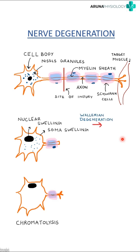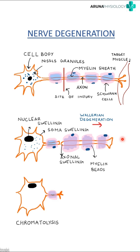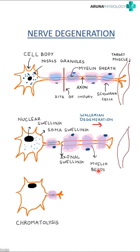The first thing you will notice is axonal swelling, and the myelin sheath will also swell up and can later be converted to fat droplets, known as myelin beads. All the extra myelin and fat droplets will then be engulfed by macrophages, leaving just the Schwann cells to rapidly divide.